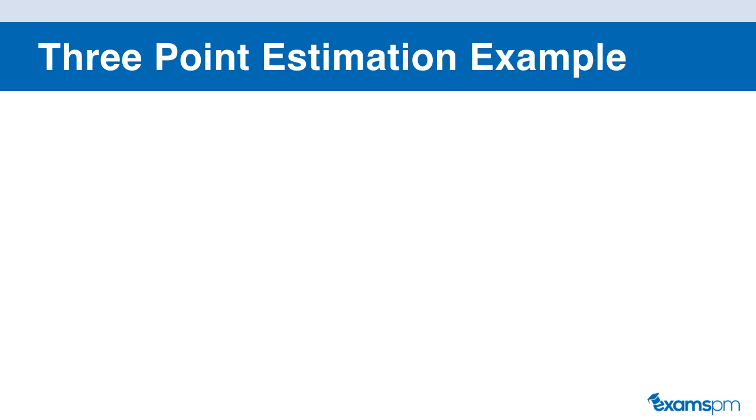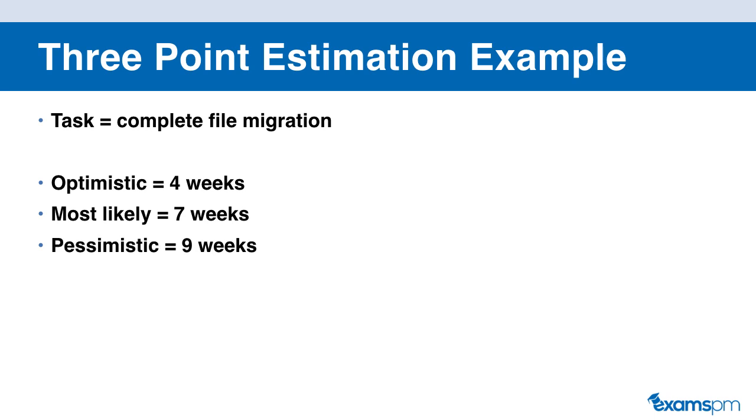Now let's take a look at an example. So let's say that our task is to complete file migration. Optimistically, it will take four weeks for us to complete this migration. Most likely, it will take us seven weeks. And pessimistically, in the worst case scenario, it'll take us nine weeks to complete. And if we're using the standard three-point estimation technique to calculate how long it will take us to complete this task, we will add up the three estimations that we have determined. So four plus seven plus nine, and divide that by three, which gives us 6.67 weeks.